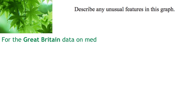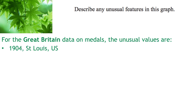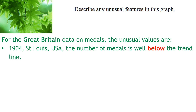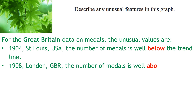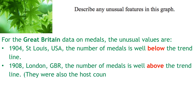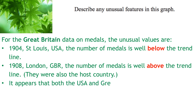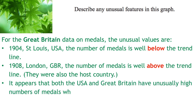For the Great Britain data, the unusual values are: in 1904, the number of medals is well below the trend line, so quite unusually low; and in 1908, the number of medals is well above the trend line. Again, they were also the host country in 1908 when they had this unusually high number of medals. So it appears from both the US and Great Britain that when they're the host country, they've got an unusually high number of medals.